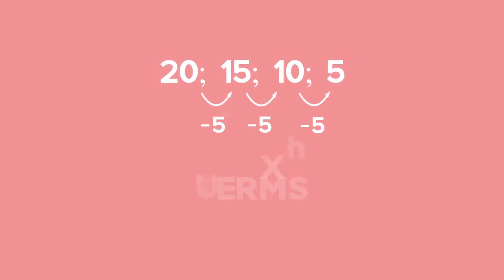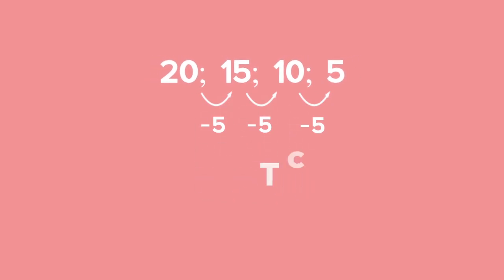Each number in this pattern — 20, 15, 10 and 5 — are called the terms. We know what follows the term with a value of 5. All we need to do is extend the pattern by subtracting 5 each time.